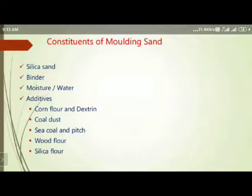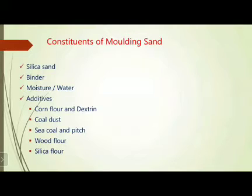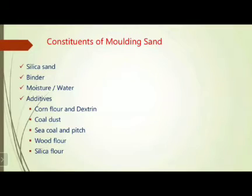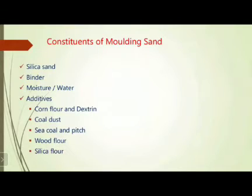According to our requirement, these additives are added to the molding sand. We use molding boxes with molding sand to pour and attain a cavity, then pour the molten metal into the cavity to get the casting product. The sand must have properties such as permeability. We will check the types of sand and discuss the different constituents.